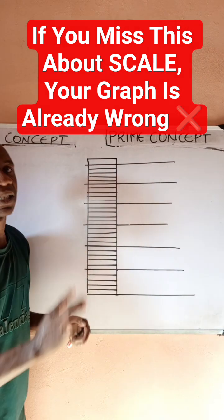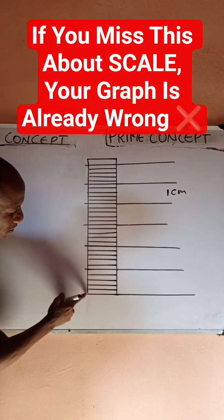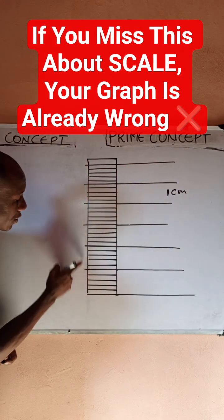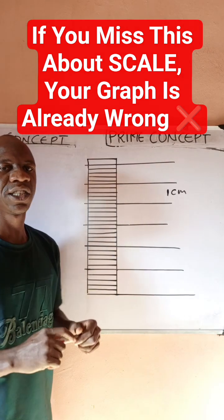One centimeter (1 cm) - that is what each box should be. From here to here is 1 cm, from here to here is 1 cm. Yes, 1 cm. So that is what each box is supposed to measure.